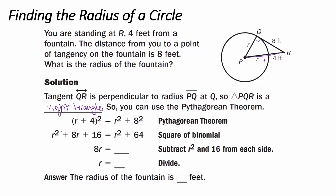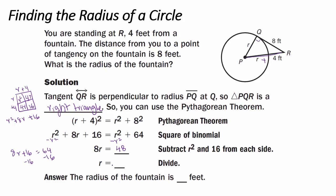We FOIL (R + 4)²: using R + 4 times R + 4, we get R² + 4R + 4R + 16, which groups to R² + 8R + 16. That equals R² + 64. Subtracting R² from both sides, the R² terms cancel, leaving 8R + 16 = 64. Subtract 16 from both sides to get 8R = 48. Divide both sides by 8, and 48 ÷ 8 = 6. So the radius of the fountain is 6 feet.